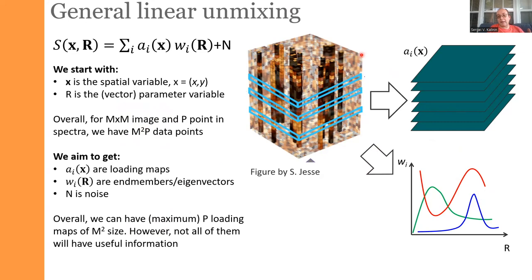The advantage of this approach is that our large hyperspectral data set — m×m pixels times p spectral points — is reduced to a much smaller number of loading maps and components. If our spectral data has a thousand pixels in the energy direction, very often we need only a few components to represent the behavior. This is possible because spectral data is highly redundant: the behavior at one point is probably only slightly different from a neighboring point.